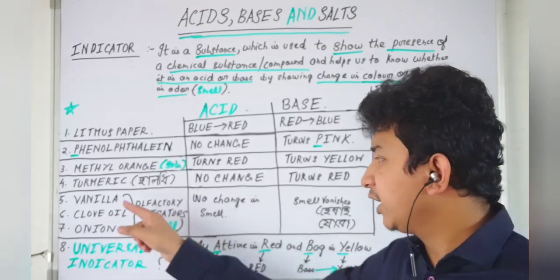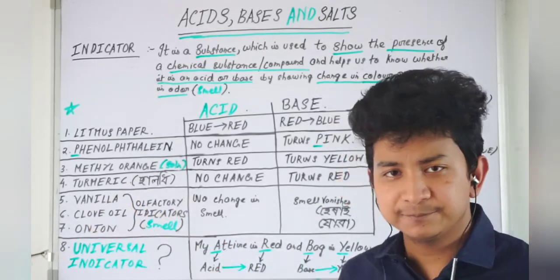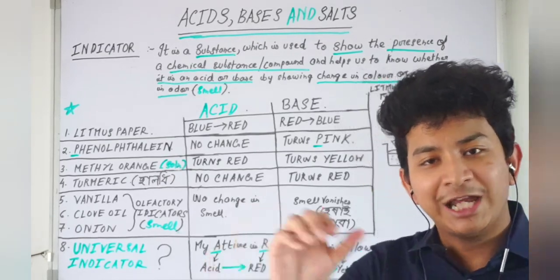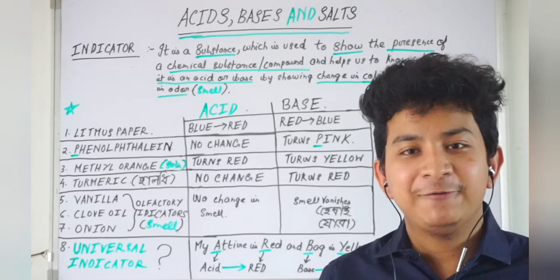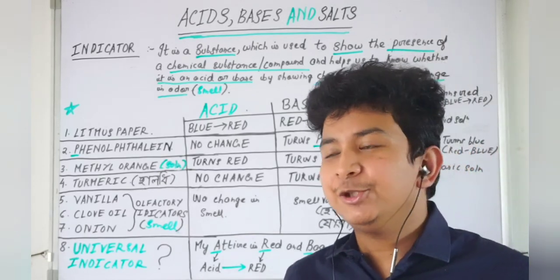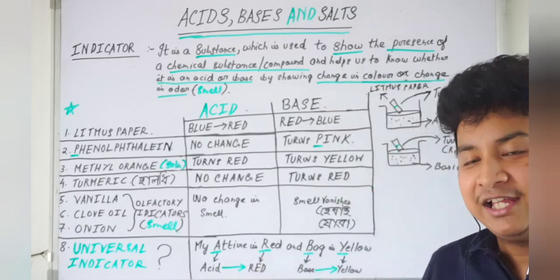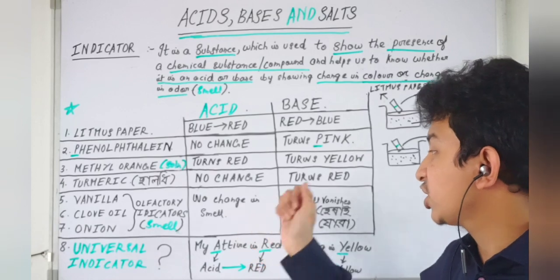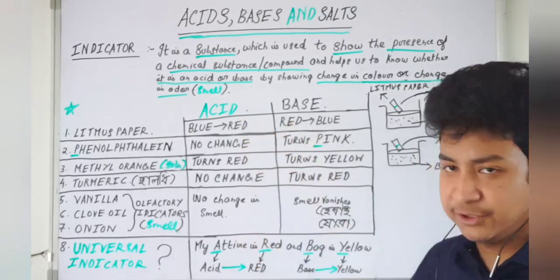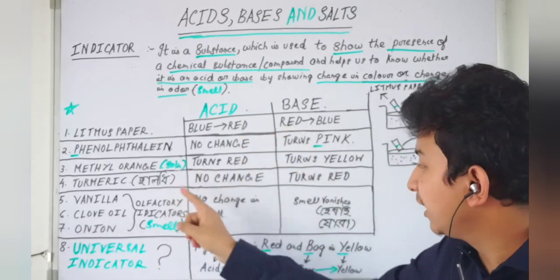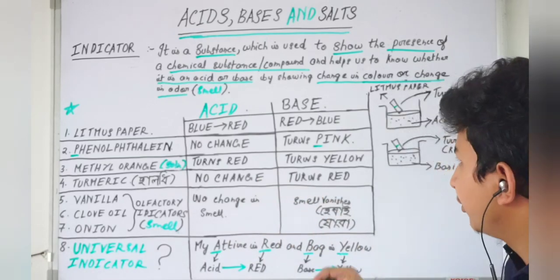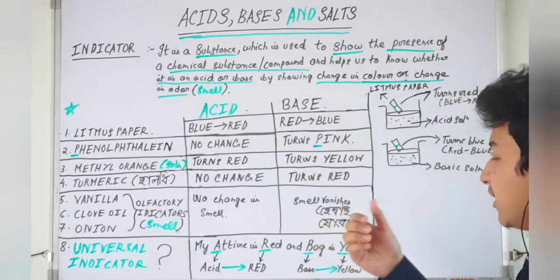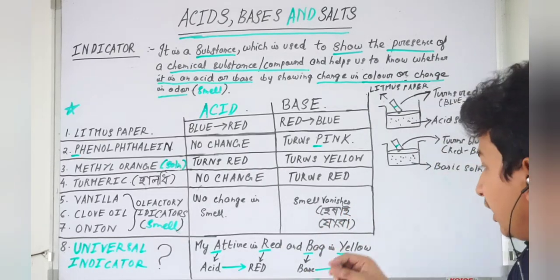The first olfactory indicator is vanilla. Vanilla has a characteristic smell - you may know from cake or ice cream. This characteristic smell of vanilla does not change in the presence of acid. But in the presence of base, the characteristic smell of vanilla vanishes. The smell disappears.